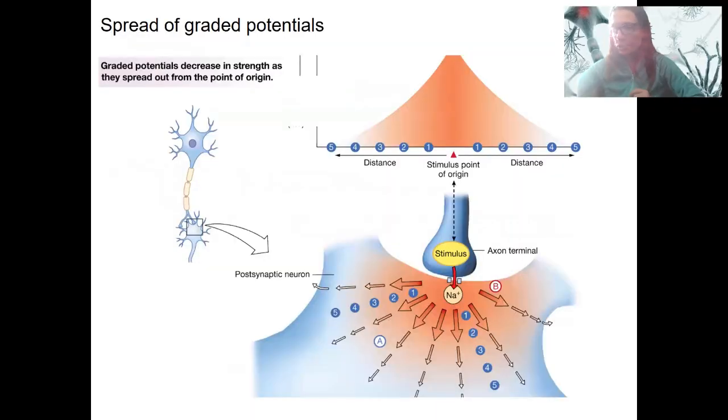Finishing up with graded potentials. Remember that they are local or graded. So they are going to spread only as far as the stimulus intensity related to that stimulus intensity. They are going to then decrease in strength depending on how far they travel. So that means if they are far from the axon hillock, they are not going to generate an action potential.